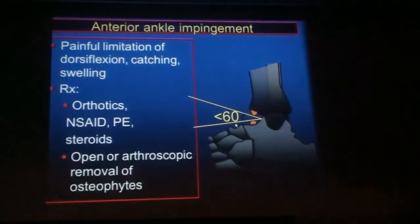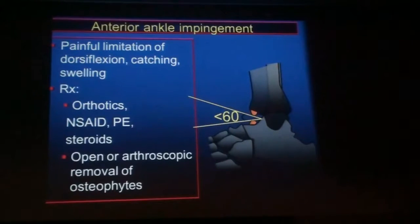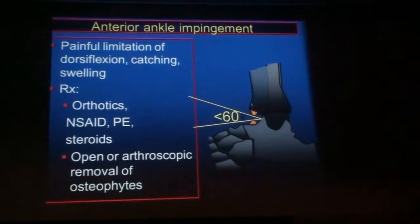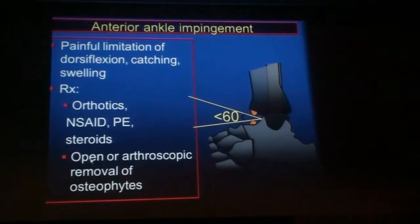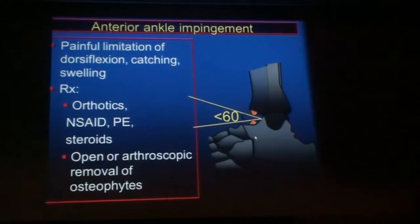I was just talking to one of the orthopedic surgeons here, and he said that at least when they do arthroscopy and they dorsiflex the foot, they don't really see the osteophytes impinging on one another. So the etiology for the pain from those opposing osteophytes, I don't think is necessarily clear yet. Treatment is orthotics, non-steroidal anti-inflammatory medication. You can do physical therapy or steroids, and if that doesn't work, arthroscopic debridement of these osteophytes.